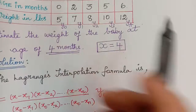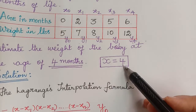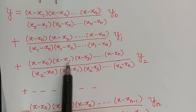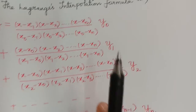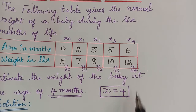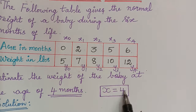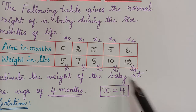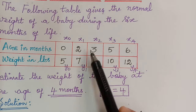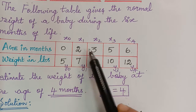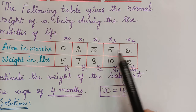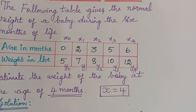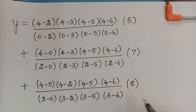For the third term, x2 is left out. So we have 4 minus 0, 4 minus 2, then leaving x2, 4 minus 5, 4 minus 6 in the numerator, divided by 3 minus 0, 3 minus 2, 3 minus 5, 3 minus 6 in the denominator, and the full term is multiplied by y2 which is 8.